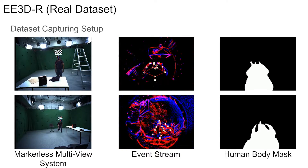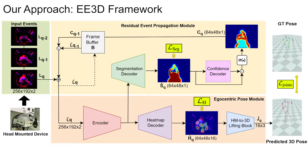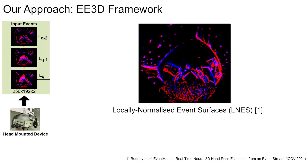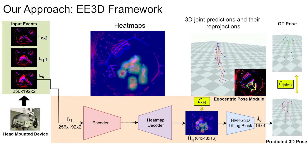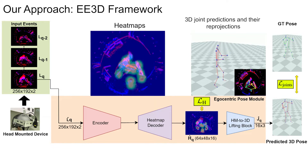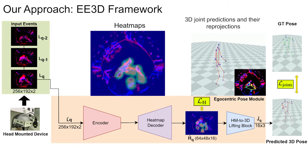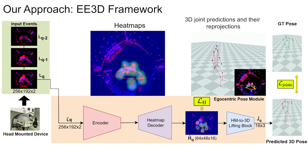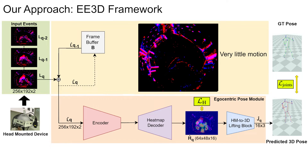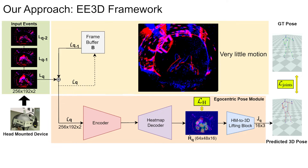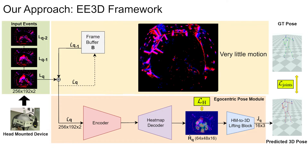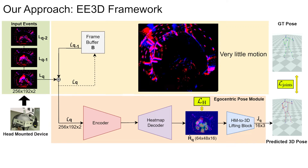Human body masks are obtained through the 2D projection of the SMPL shapes. Our framework takes a monocular event stream as input and estimates the 3D human body pose. To process the event stream effectively, we convert the 1D event stream into LNES frames. We employ a two-step approach: first, 2D body joint heat maps are generated using an encoder-decoder network from the input frames; then, a lifting network converts the heat maps into 3D body joint estimates. We implement a frame buffer that retains the event history, ensuring preservation of the 3D human body pose even when minimal motion generates a sparse number of events.